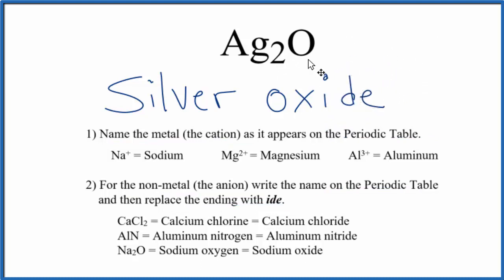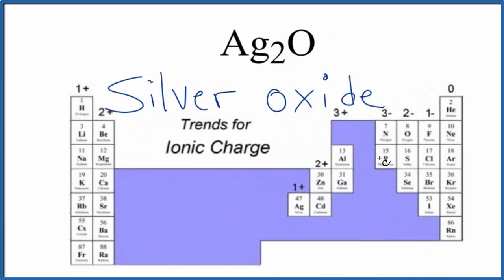So the name for Ag2O is silver oxide. Ag2O however is a bit of a complicated compound. Although it's a transition metal it normally has this 1 plus ionic charge so quite often you'll see this just as silver oxide.